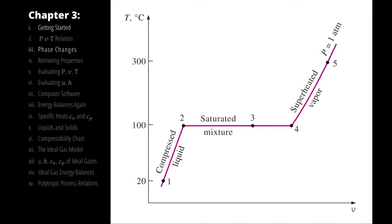If we can look up the saturation condition, we can use our properties to determine the phase. Here we must be looking at water, because at one atmosphere, water changes phase at the saturation temperature — the boiling point — of 100 degrees Celsius. So if we knew we had water at one atmosphere and the temperature was 90 degrees Celsius, that must be less than the saturation temperature, meaning we must be in the compressed liquid region.